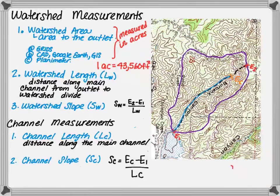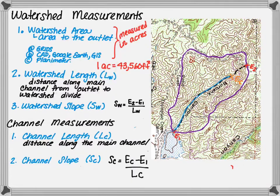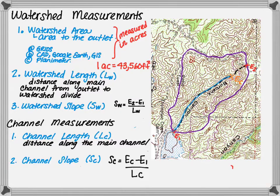The channel slope is determined by taking the elevation difference from the top of the channel EC to the outlet E1 and dividing it by the channel length LC. Similar to watershed slope this is a dimensionless number. Slope can be used for many different purposes but it's primarily used to understand how quickly water will drain in a system. The steeper the watershed the faster the water will move.